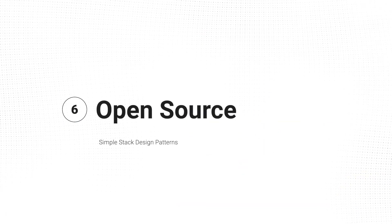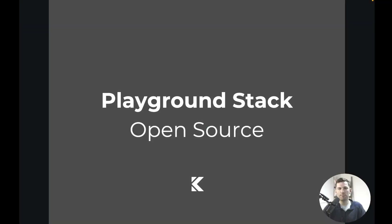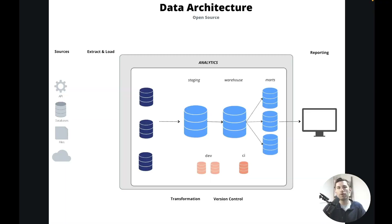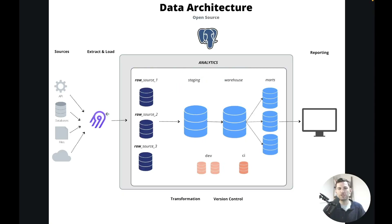Now let's talk about the open source option, which is also going to be the playground stack that we build. The database we're going to use is Postgres, because it'll be easy for all of us to build together and stay on the same page. You'll notice this diagram looks a little different — we got rid of the separate database layer because with Postgres out of the box you can't easily query across databases. For ingestion, we'll use Airbyte, which provides an open source self-hosted option, and it will load data into the raw tables.